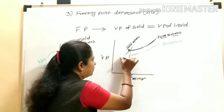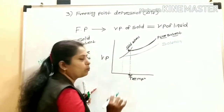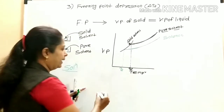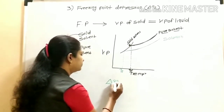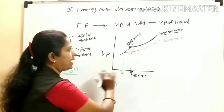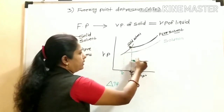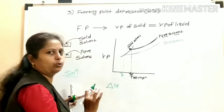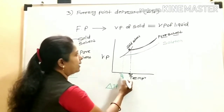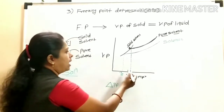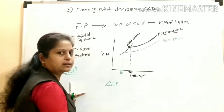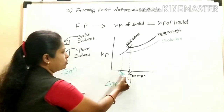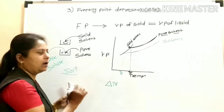When the solution curve and the solid solvent curve intersect, that intersection gives the freezing point of the solution, denoted as Tf. The freezing point of the solution is less than the freezing point of the pure solvent.